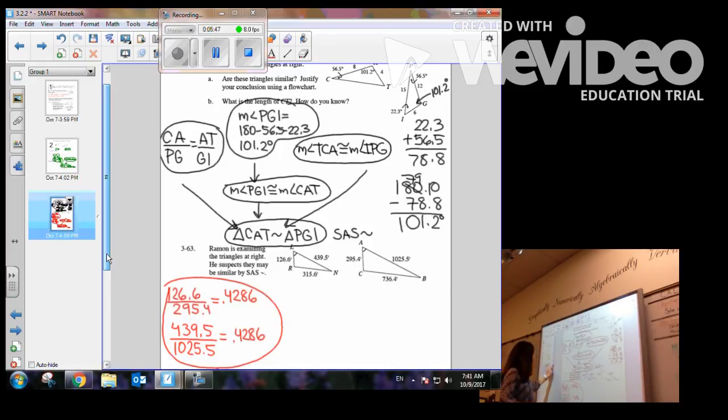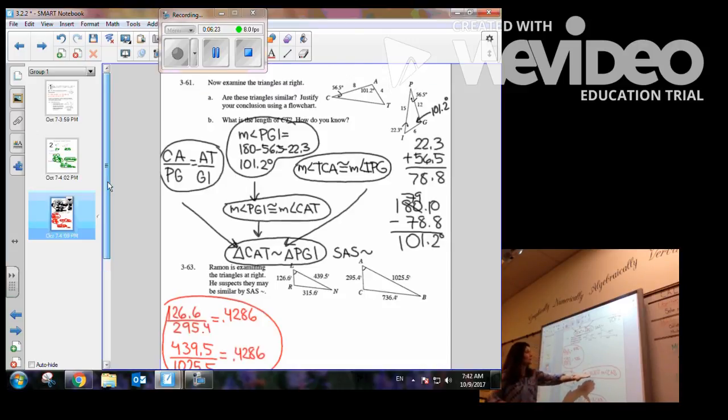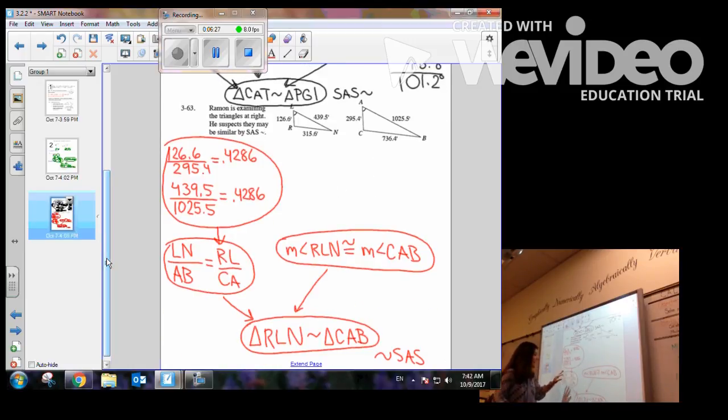And then the last one that you did was, you're given two triangles. Now notice the numbers are quite large, and I just can't look at the ratios and say, oh yeah, 8 over 12 equals 4 over 6. I actually have to do some mathematical calculations. So that's what I do first. I look at the ratio of 126.6 to 295.4, and I get this ratio, and I get this ratio. So I see that the ratios are equal, so therefore the proportion is true. So now I label LN over AB is equal to RL over CA. And then the fact that I was given was that measurement of RLN is congruent to measurement CAB. So now I have two facts, and they are side-angle-side to show similarity of the two triangles. I hope that this is making sense to you.